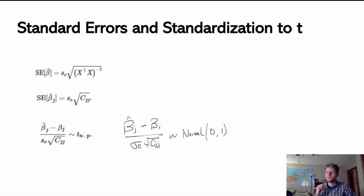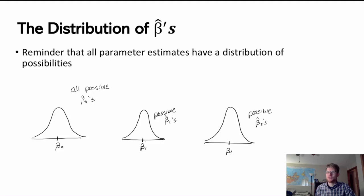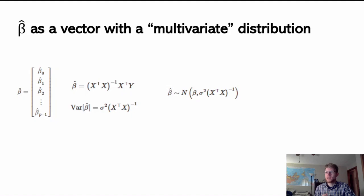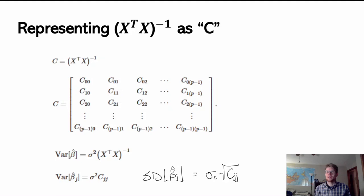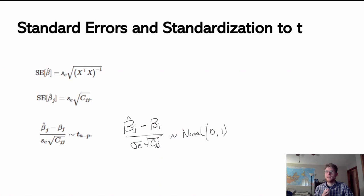So the big idea of this video is that beta hats have a distribution. We don't know when doing inference where our particular beta hats fall, but we know they're in some distribution around the parameters. We can calculate the variance of any individual beta hat using the C matrix expression, estimate the standard error with our sample information, and know that the standardized value follows a t-distribution — which we can use to construct confidence intervals or hypothesis tests for beta j.